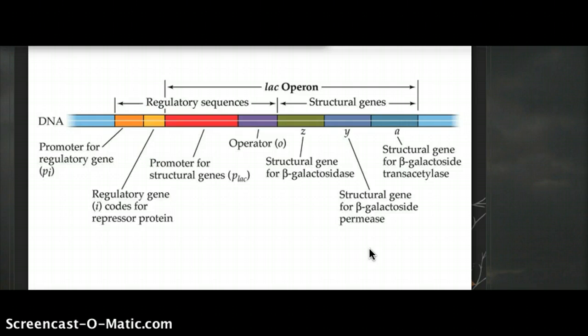For example, in an experiment where E. coli has glucose but no lactose, which substance would be decreased? You could say adenylate cyclase or cAMP. If there is lactose present, which substance would be increased? You could say cAMP would be increased and beta-galactosidase would be increased.